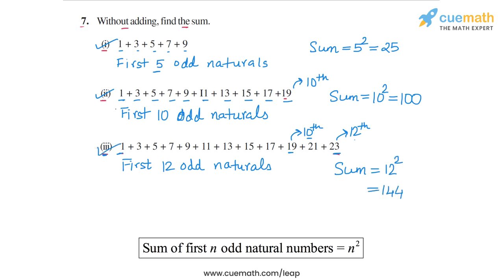That completes part 3. The answer to this question: the sum in the first part is 25, the sum in the second part is 100, and the sum in the third part is 144. That completes question number 7.